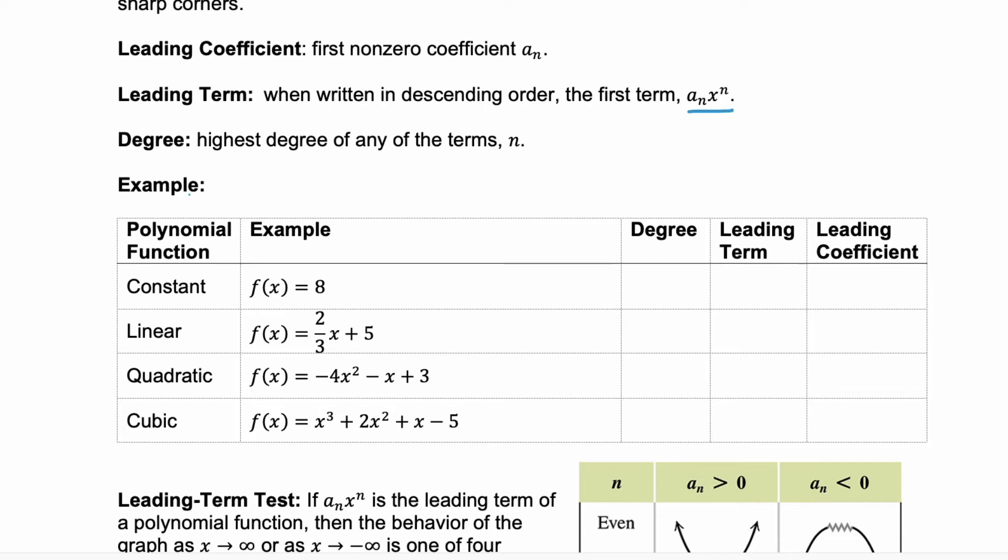Let's look at four different examples. First, we have the constant function, f(x) = 8. This is degree 0 because there's no variable.